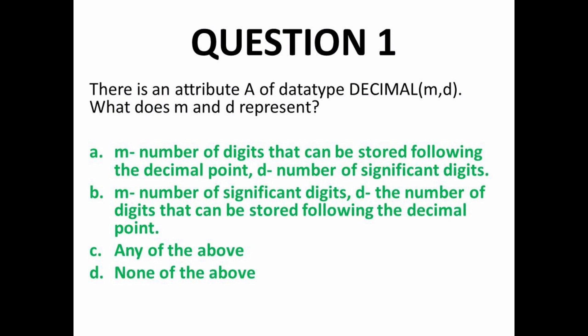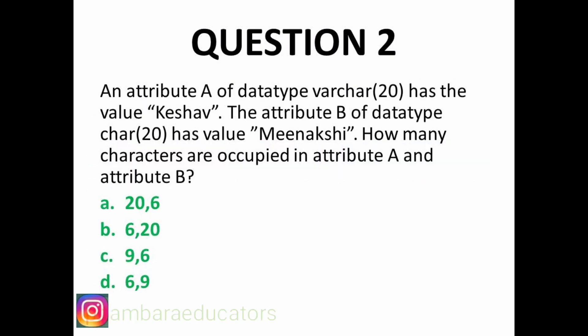And D represents the number of digits following the decimal point — for example, after the decimal in 15.80, there are two digits. So M is the total significant digits and D is the number of decimal digits. Moving on to the second MCQ, which is from the CBSE sample paper.